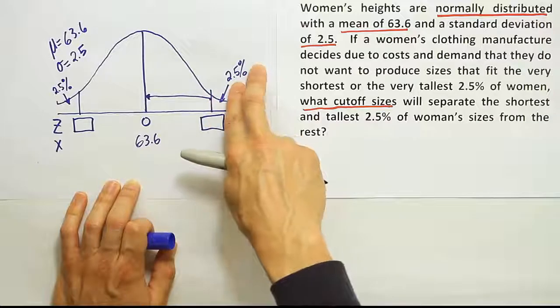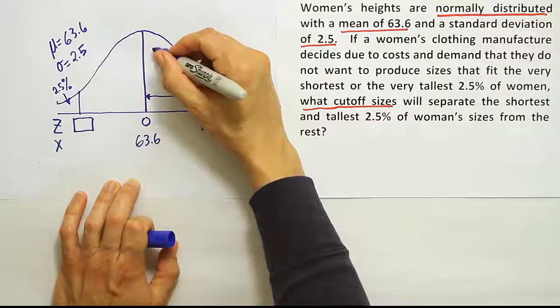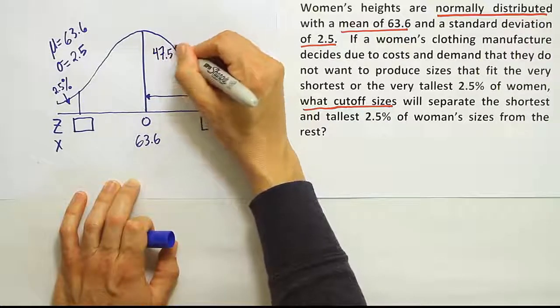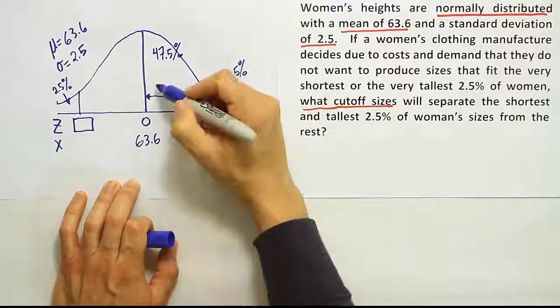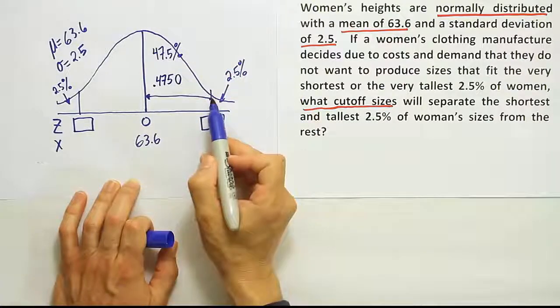It's the same logic as before. Half the curve is located here from the mean over. If that's half the curve, that's 50% of the area. If you take 2.5% away from 50, you'll find that you get 47.5%. So that's what this must be. This must be 47.5%. If that's the case, as a decimal, that's 0.4750. So this is the area from here to here.